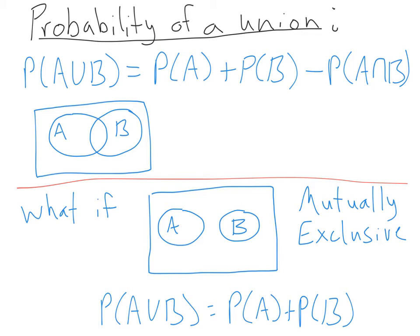We're going to focus on unions and finding the probability of a union. The formula is: P(A ∪ B) = P(A) + P(B) − P(A ∩ B). This makes a lot of sense: A union B is all of A and all of B. If you add P(A) plus P(B), the overlapping middle piece gets counted twice — once when you add all of A and once when you add all of B. Since you added it twice, your probability is bigger than it should be, so you subtract off that intersection to balance it out. That's all the formula says — it's very useful and pretty easy to use.